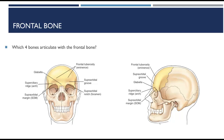The frontal bone consists of two main parts: the squamous or vertical portion, which is the forehead, and the orbital or horizontal portion, which forms the superior part of the orbit. The squamous or vertical portion is the portion that forms a patient's forehead.